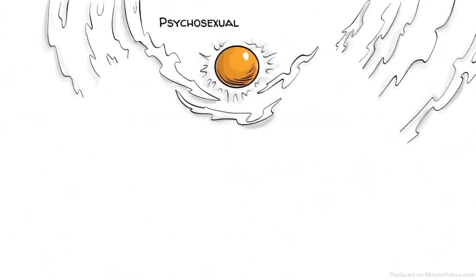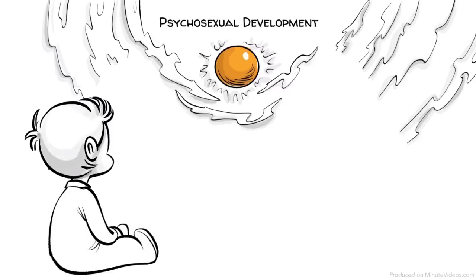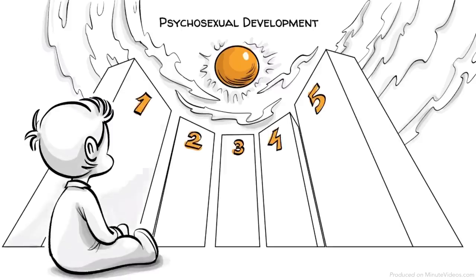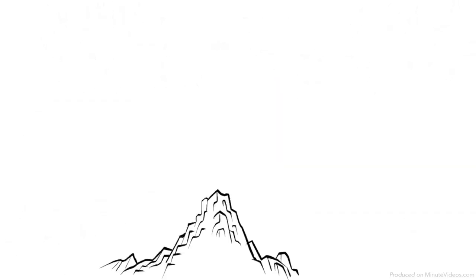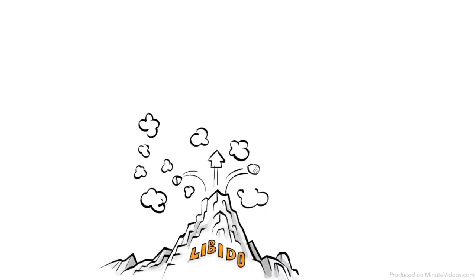Freud's theory of psychosexual development claims that as we grow up we pass through five critical phases. Our sex drive, which Freud called the libido, focuses in a different erogenous zone at each phase.